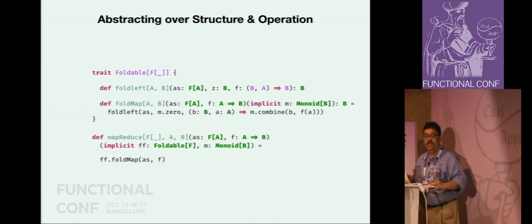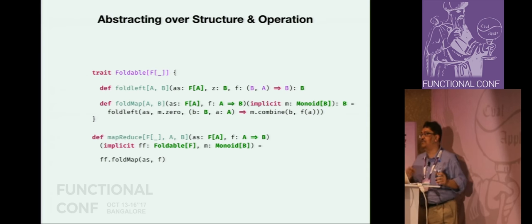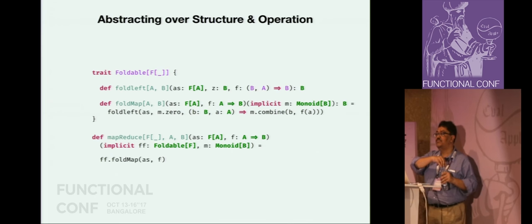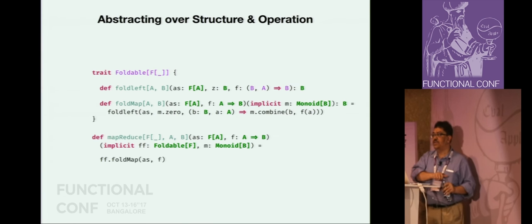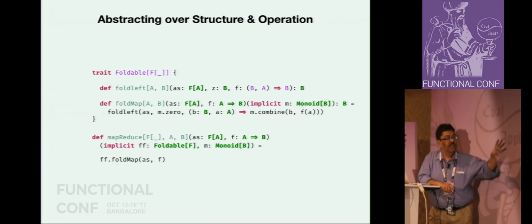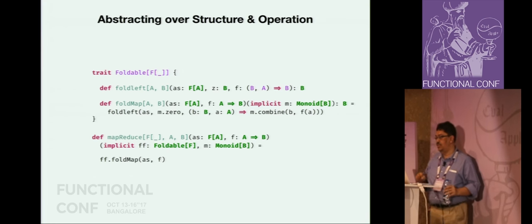Map reduce - we have seen this in the context of big data and Hadoop. Any small difference between this map reduce and the one used in Hadoop? In the case of Hadoop MapReduce, the operations need to be commutative. Here we do not have this restriction - the operations are not commutative. So we have been able to abstract over the structure and operation by using Foldable as opposed to list, and by delegating the logic to combine elements to the monoid which is a generic algebra.